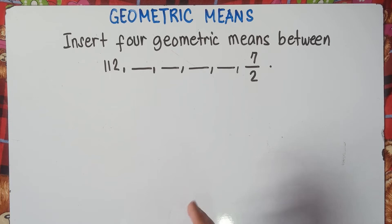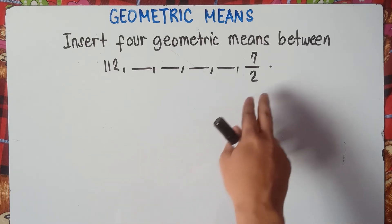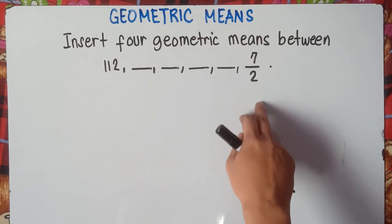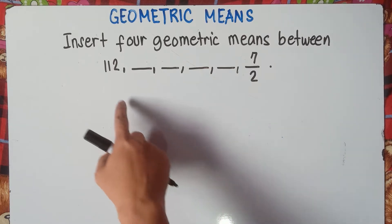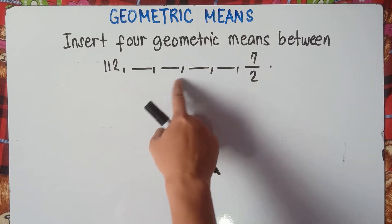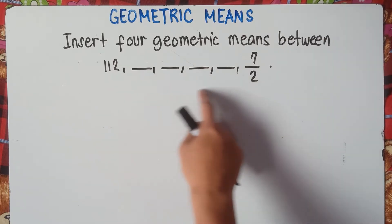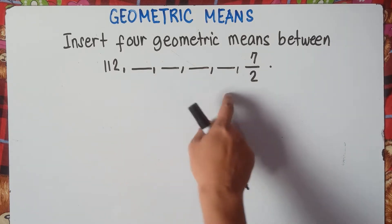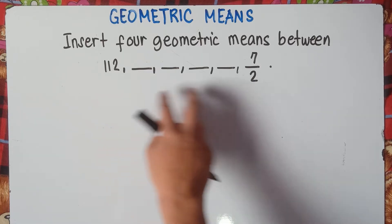Insert 4 Geometric Means between 112 and 7 over 2. So we have 6 terms: 1, 2, 3, 4, 5, 6 — and we're going to insert Geometric Means between these two given terms.